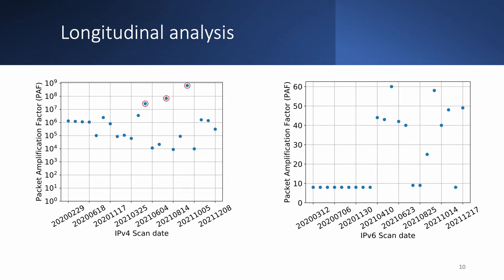As we have been running open resolver scans since early 2020, we additionally computed maximum packet amplification factors per scan. The figure on the left shows results in IPv4 — note the logarithmic scale. During each scan, we saw at least tens of thousands, but often millions of repeating responses. Amplifiers were located in nine autonomous systems, meaning most appeared during multiple scans. In IPv6 on the right, we do not see much amplification; the highest packet amplification factor observed is only 60.